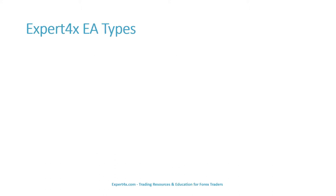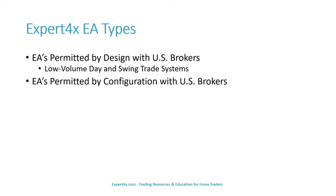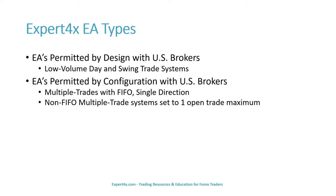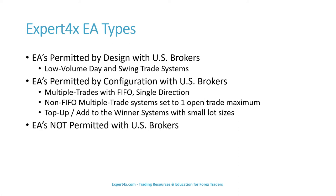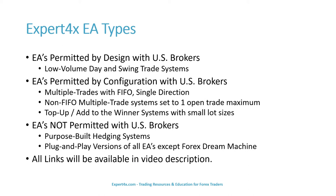Now we are going to discuss the Expert Forex EA types. EAs permitted by design with U.S. brokers are low-volume day and swing trade systems. EAs permitted by configuration with U.S. brokers include multiple trades with FIFO single-direction, non-FIFO multiple trade systems set to one open trade maximum, and top-up/add-to-the-winner systems with small lot sizes. EAs not permitted with U.S. brokers include purpose-built hedging systems and plug-and-play versions of all EAs except the Forex Dream Machine. All links will be available in the video description.